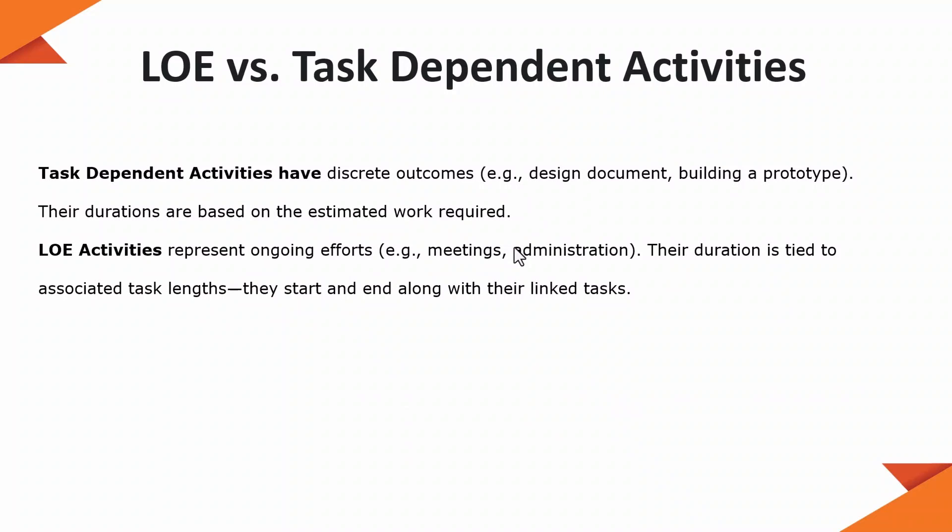Let's understand the difference between task-dependent and level of effort tasks. Task-dependent tasks have discrete outcomes — particular deliverables like design documents, a building prototype, or completion of a building — and their duration is based on the estimated work required. Level of effort, on the other hand, represents an ongoing effort like meetings, budget management, or administration tasks that act as enablers for completing those task-dependent activities. The duration is tied to the associated tasks' length.